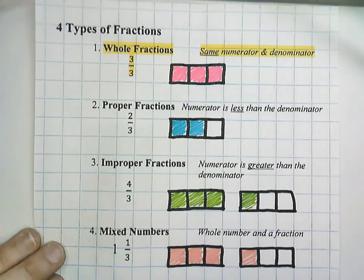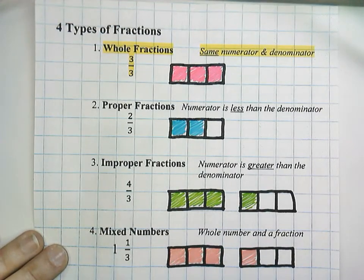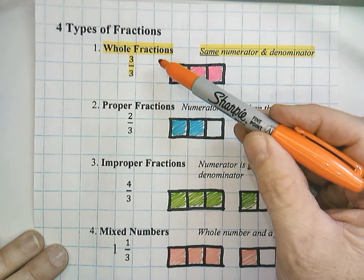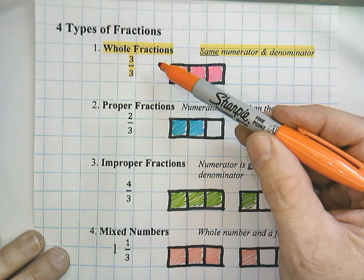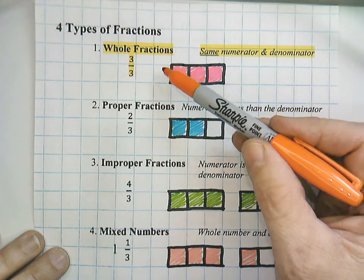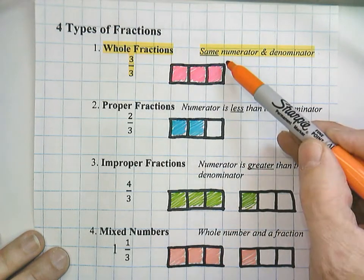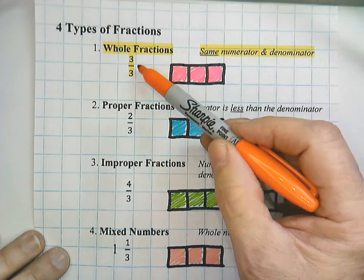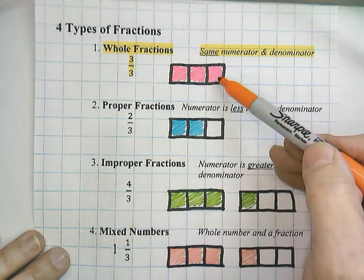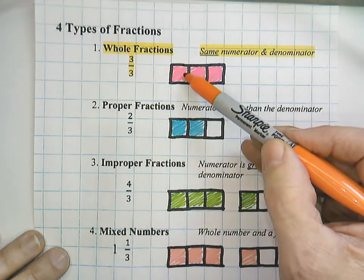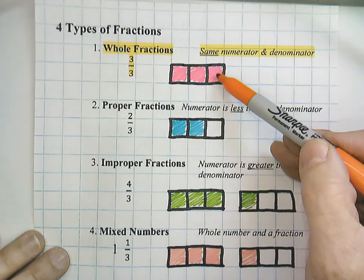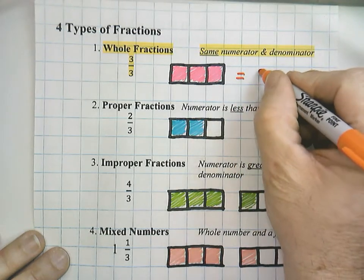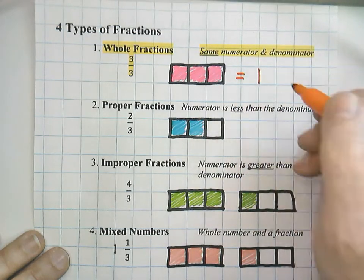There are four types of fractions that you probably want to know. Our lesson focus today is on whole fractions. Remember that whole fractions have the same numerator and denominator — we see it modeled here as 3 thirds, with all pieces shaded, and we said that equals 1.